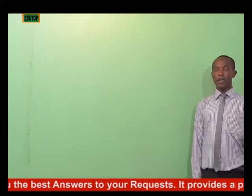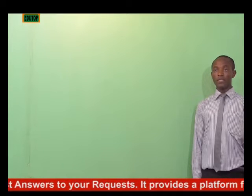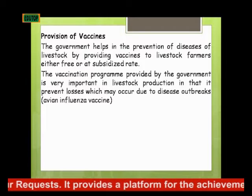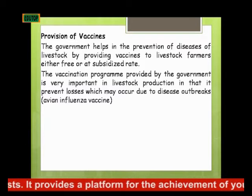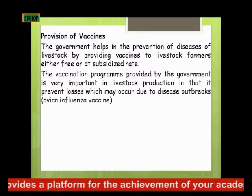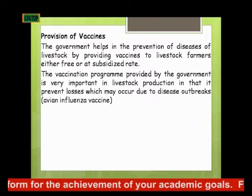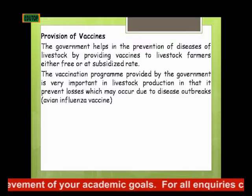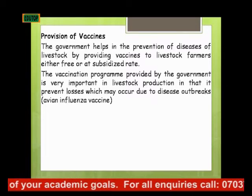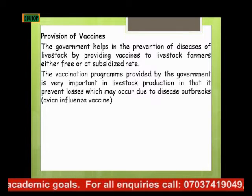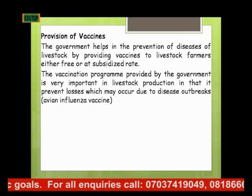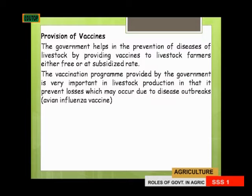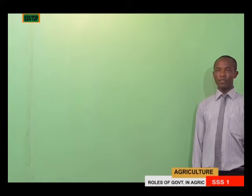The last role of the government we are covering in this series is the provision of vaccines. The government helps in the prevention of disease in livestock by providing vaccines to livestock farmers, either free or at subsidized rates. The vaccination programs provided by the government are very important in livestock production, in that they prevent losses which may occur due to disease outbreaks, such as the avian influenza.